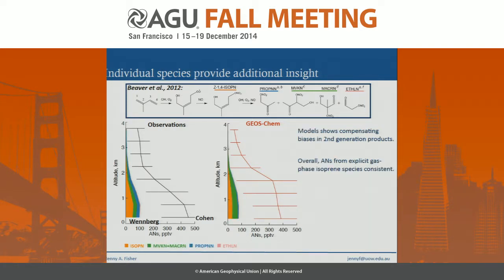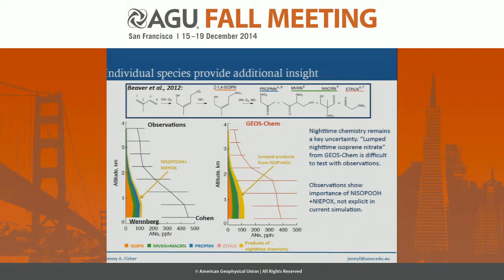Adding in second generation species — all individually measured by the Wennberg group and explicitly modeled in GEOSChem — there are some compensating biases in the model we need to understand. Overall, the sum of first and second generation species is quite consistent between observations and model, but still represents only a small piece of the total alkyl nitrate pie. Importantly, products of nighttime chemistry — isoprene plus nitrate radical — remain a really huge source of uncertainty. In GEOSChem we have a lumped product from this pathway that appears as important as other first or second generation species, but it's difficult to test against observations due to its lumped nature.